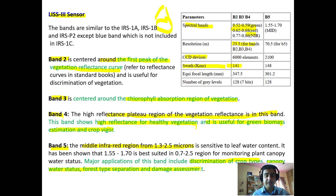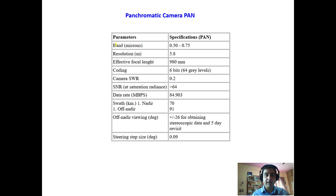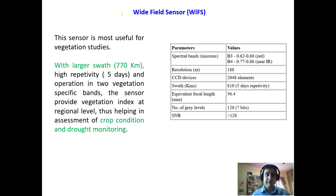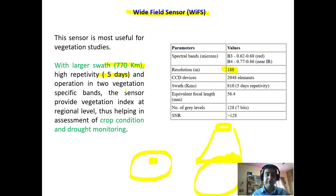The PAN sensor has a wavelength of 0.5 to 0.75 microns, a very high resolution of 5.8 meters, and a focal length of 980 mm. The Wide Field Sensor has a very low resolution of 188 meters and a swath of 771 kilometers, with a revisit time of 5 days — meaning the same image of a particular area is available again after only 5 days. It can help in crop condition and drought assessment monitoring.